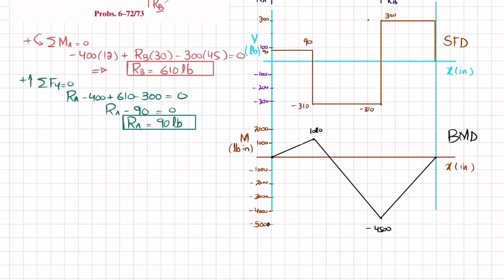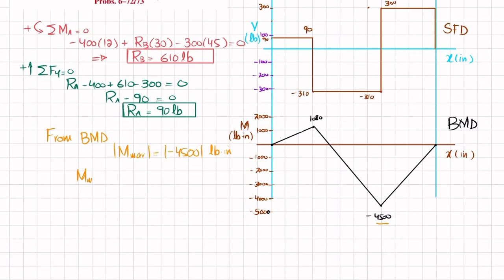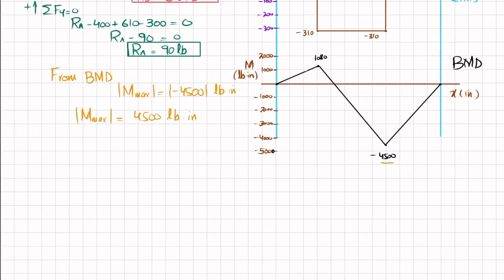From the bending moment diagram, the maximum absolute value of the bending moment is 4500 pound-inches.